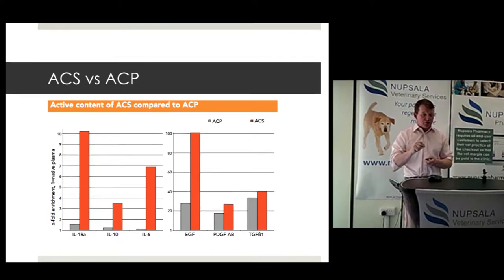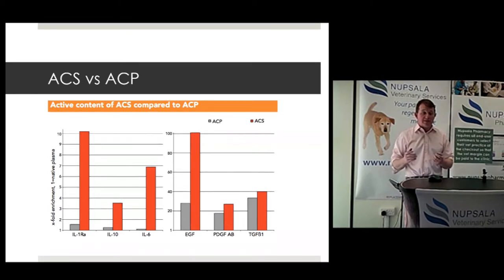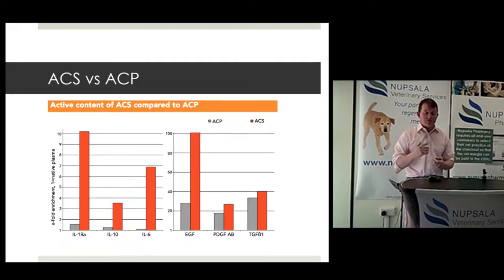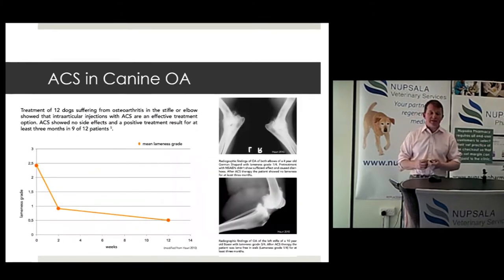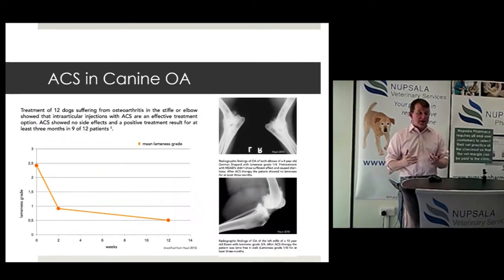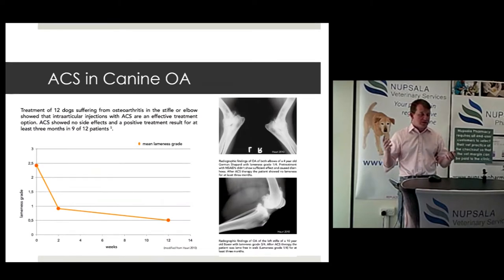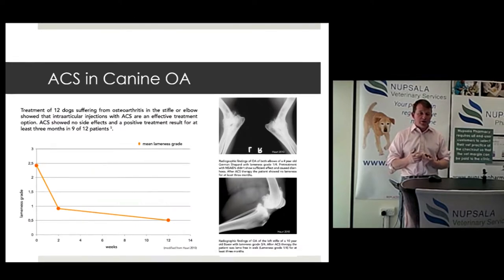That's not to say you won't use ACP — ACP has advantages, particularly the growth factors it contains. But I wouldn't be using ACP for the application of generating interleukin-1 receptor antagonist protein. ACS in canine has been used in human and equine medicine for a phenomenal amount of time — over ten years in equine and human disease treatment.